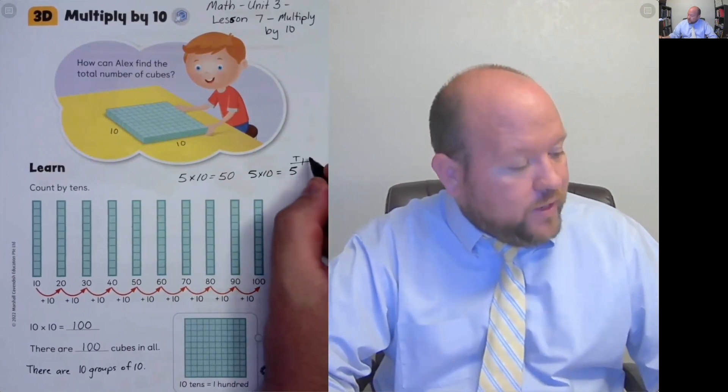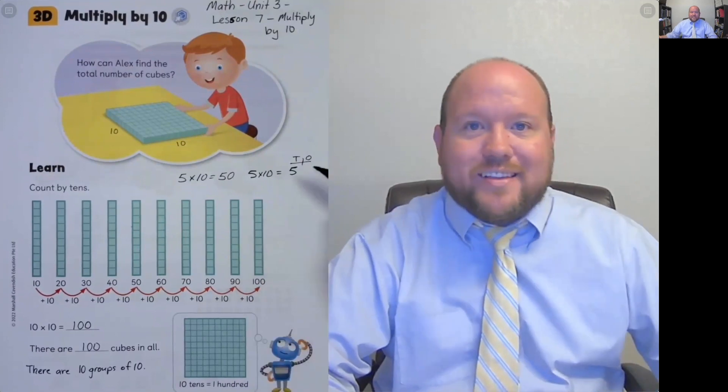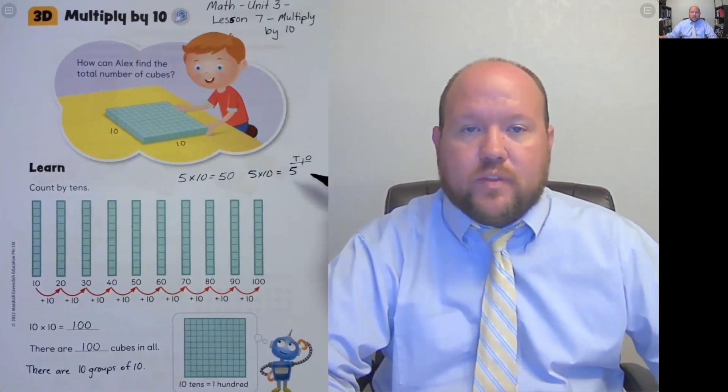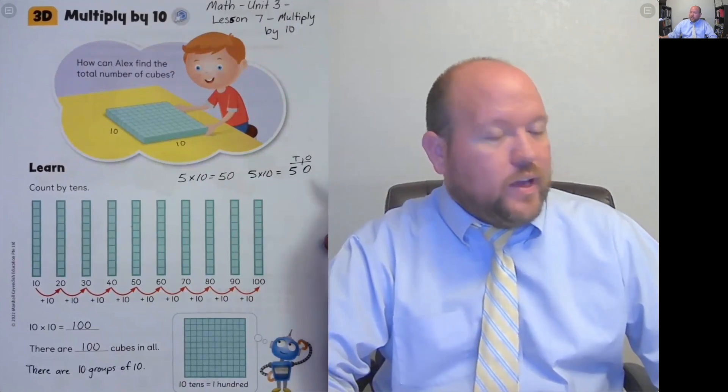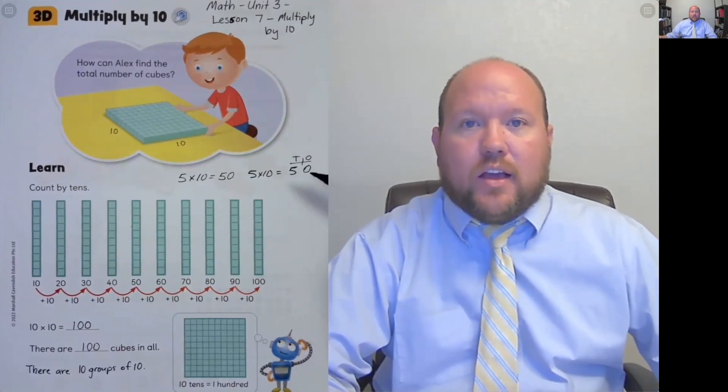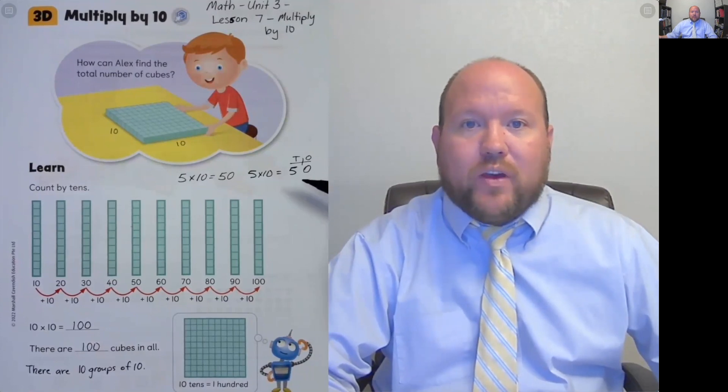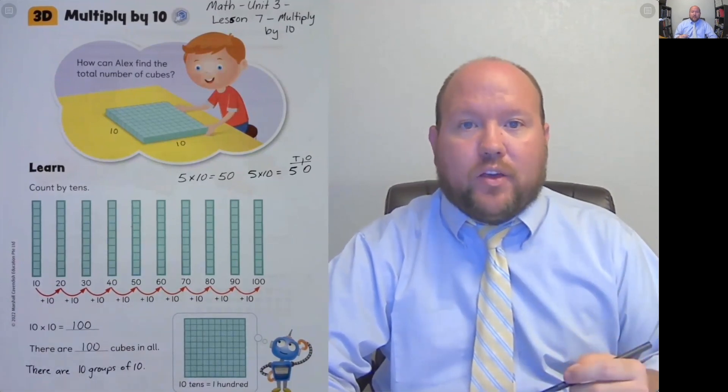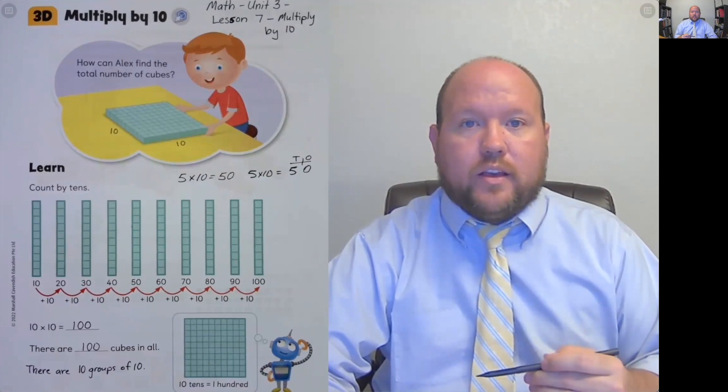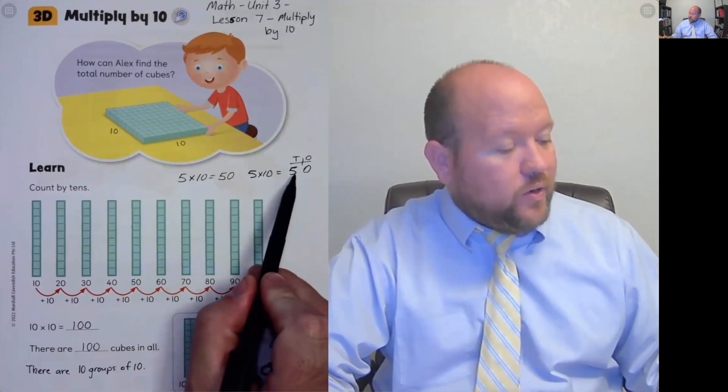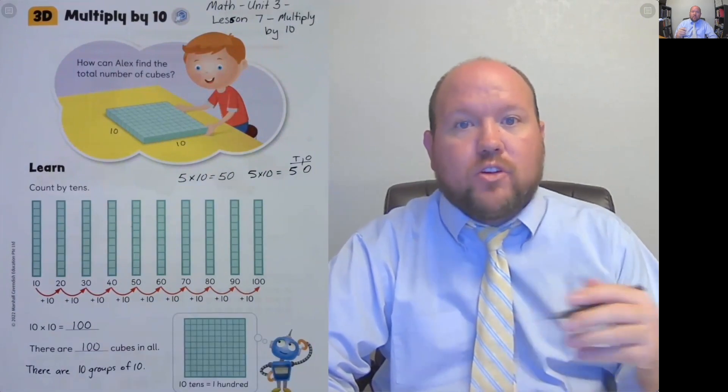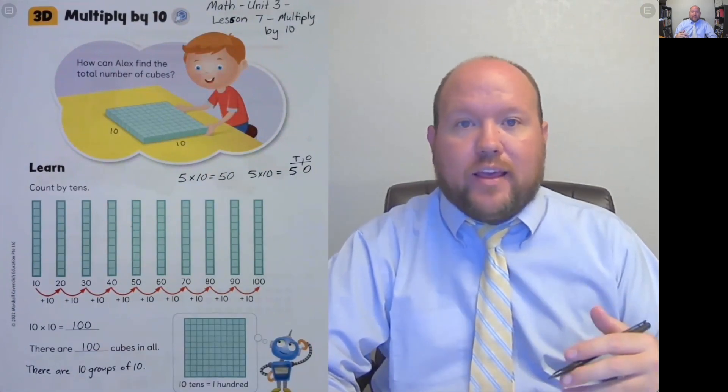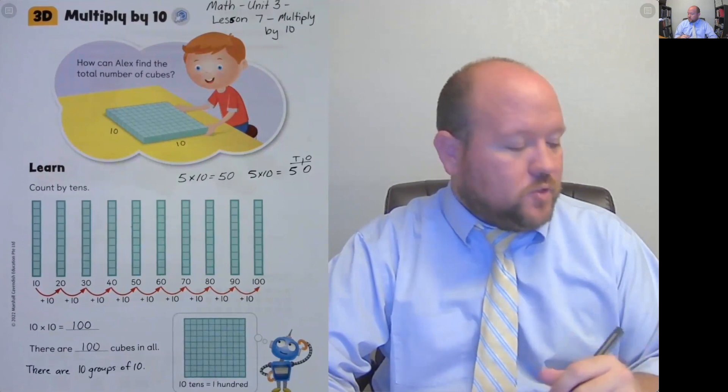Now that 5 was in the ones place, but now I'm going to move it over and put it in the tens place. And if I put it in the tens place, well, I need something in the ones place to hold that value. So what's a place value holder? A zero. And so instead of just thinking multiplying by 10 adds a zero, think I'm moving the place value over one so that the place value is now in the tens place.